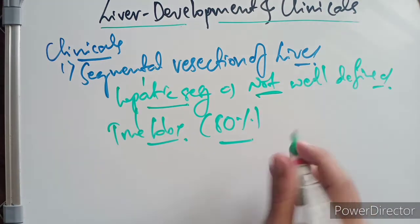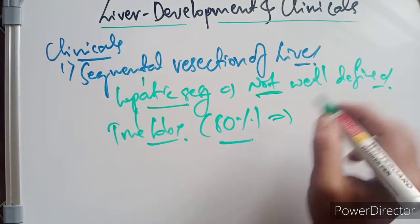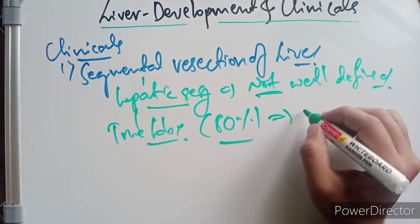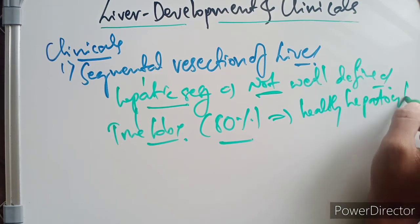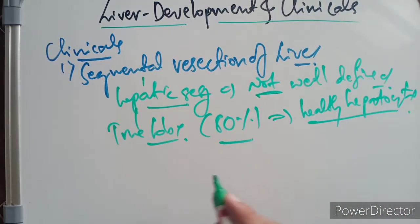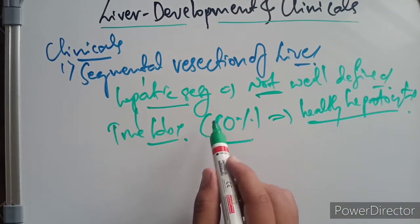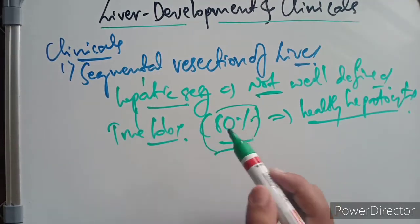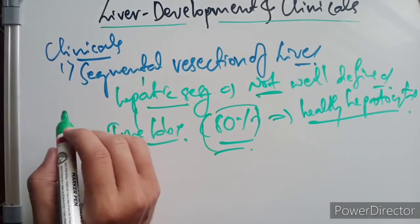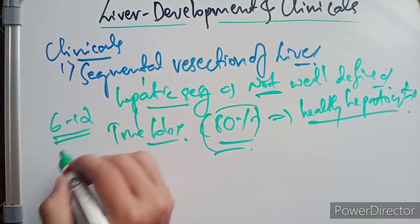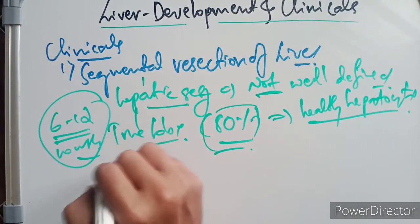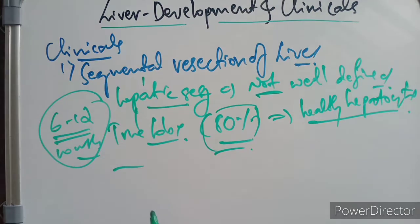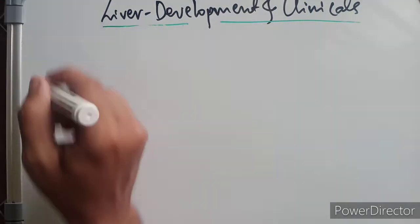A large volume of liver — up to 80 percent — can be removed safely because healthy hepatocytes have great regeneratory capacity. The liver can regrow to its original size in up to six to twelve months.